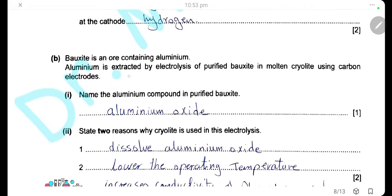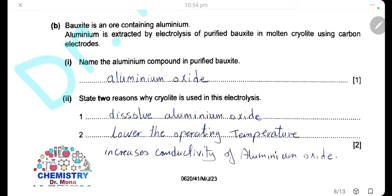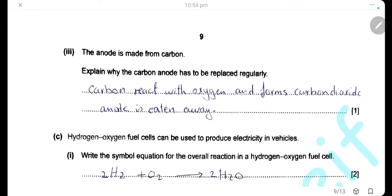Bauxite is an ore containing aluminum. Aluminum is extracted by electrolysis of purified bauxite in molten cryolite using carbon electrodes. The aluminum compound in purified bauxite is aluminum oxide. Cryolite is used to dissolve aluminum oxide, to lower the operating temperature by lowering the melting point of aluminum oxide, and to increase the conductivity. The carbon anode has to be replaced regularly because carbon reacts with the oxygen gas discharged at the anode to form carbon dioxide, so the carbon anode is gradually eaten away.